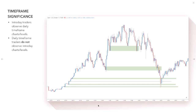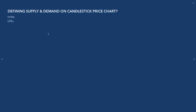The daily and weekly zones are a lot more significant. I understand why traders look for intraday setups because they want more trades, but we need to properly define supply and demand on a candlestick price chart. I don't subscribe to the rally-base-drop or drop-base-rally method of thinking.